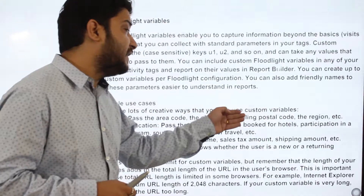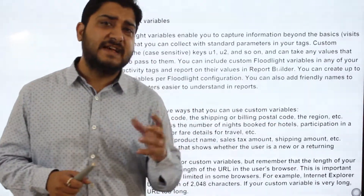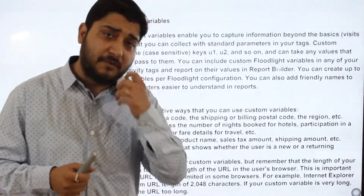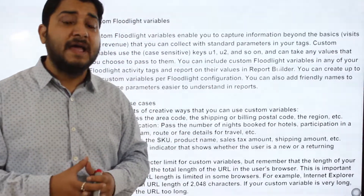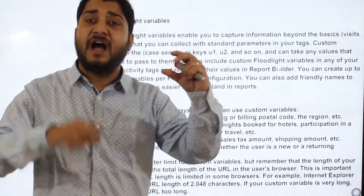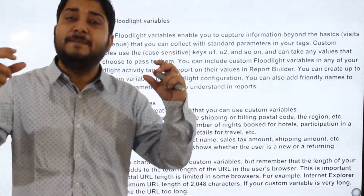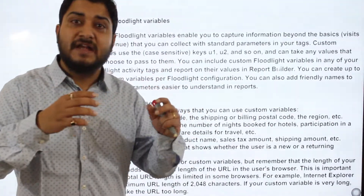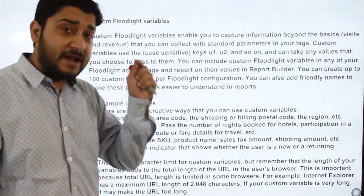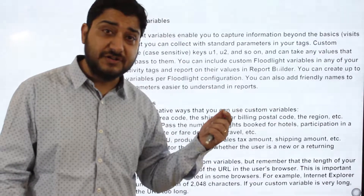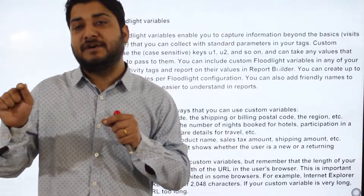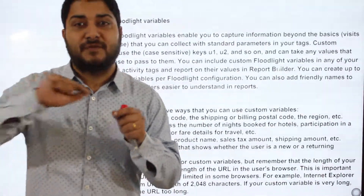There are many creative ways to use custom floodlight variables — for example, location: passing the area code, shipping or billing postal codes, or the region. For instance, if you are an e-commerce platform selling something and you want a report on how many users from different locations bought a particular product, you create a variable like u1 with the value 'location.'